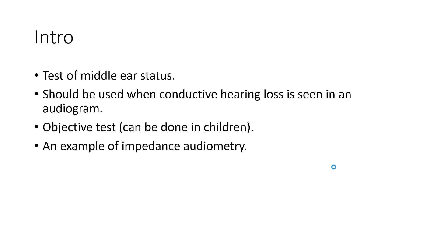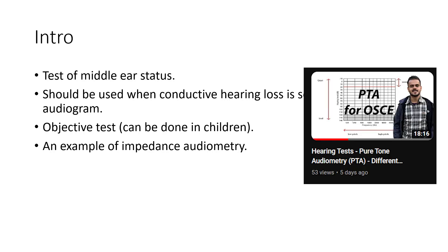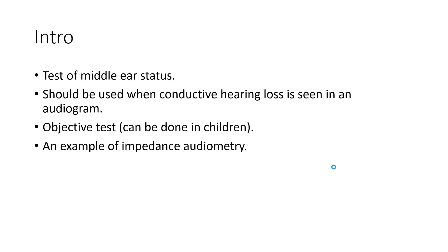Hello everyone. Today we are going to talk about tympanometry. Tympanometry is basically the test of middle ear status. Remember the last time we talked about audiometry — when the audiogram shows conductive hearing loss, that means there is a problem either in the external ear or the middle ear. So if we are suspecting a problem in the middle ear, we can do tympanometry to confirm our finding.